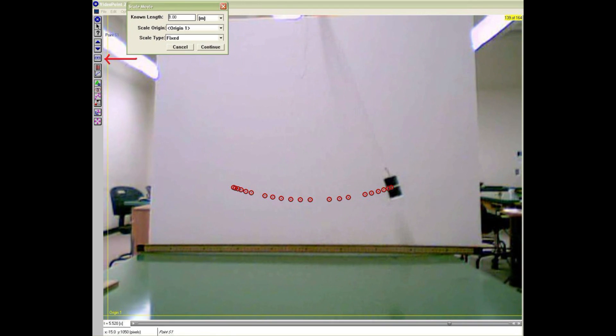Your video points must now be scaled to the meter stick you conveniently laid at the base of the pendulum. Click on the icon at left that looks like a ruler and indicate that the object you are using to scale is exactly one meter in length. Then use your cursor to indicate the left end of the meter stick, followed by the right end of the meter stick.